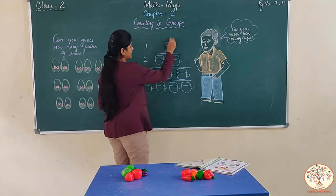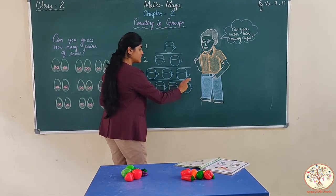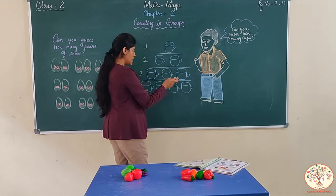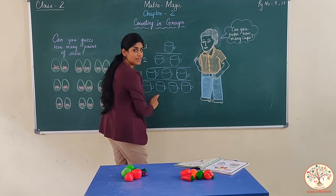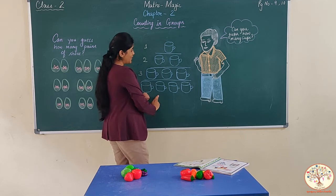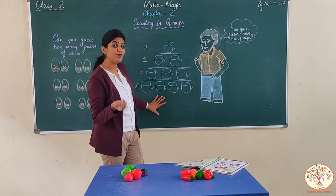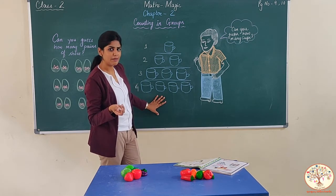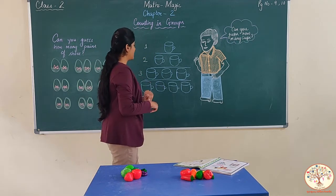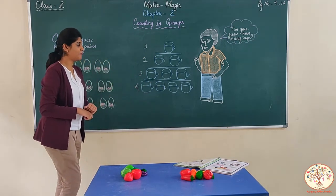Ham aise bhi le sakte hain: 3 plus 3 equals 6, 6 plus 4 equals 10. Very good. Now you understand how to count in a group. Let's check another example.